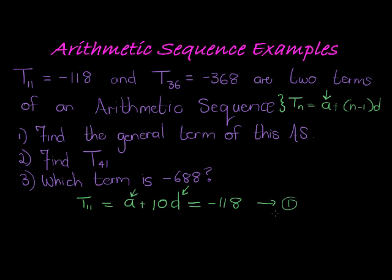To find two unknowns, I need two equations. You got it? How about a second equation? Well, the other equation I'll just get when I look at term 36. Okay, term 36 is a plus 35 d's, and then I get negative 368. This is my second term.